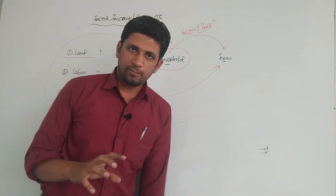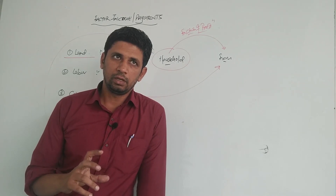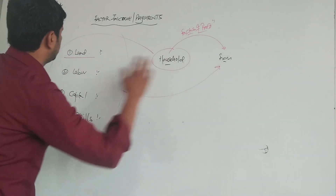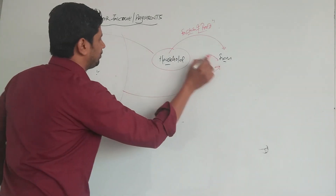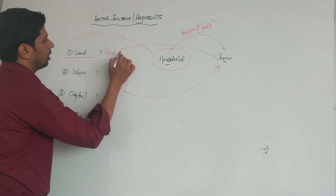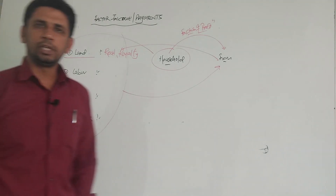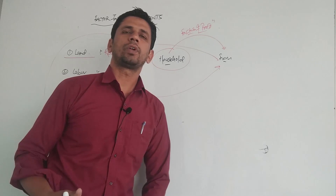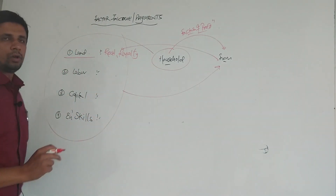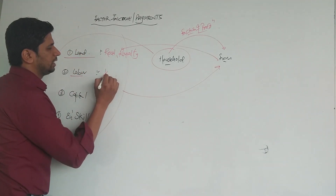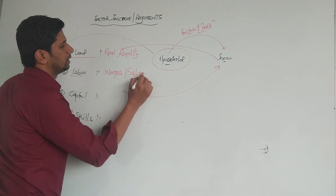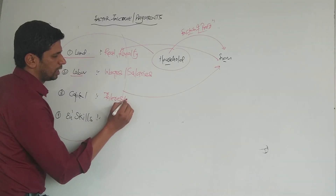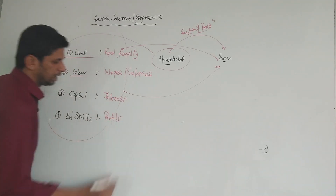When these factors of production are provided to the firm sector, it is an economic activity against payment. If the firm sector is taking land from the household sector, it has to pay something in return — that payment is called rent or royalty. Against labour, they pay wages or salaries. Against capital, they pay interest. And against entrepreneurship skills, the entrepreneur takes his profit.